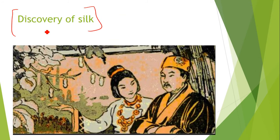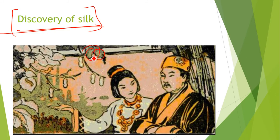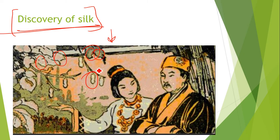Now we will discuss the discovery of silk. What happened in China? A queen noticed that mulberry trees in her garden were being eaten. One day, while the queen was drinking tea, a cocoon fell into her warm cup of tea. The warm water softened the strands and she started feeling them on her fingers. She realized the thread was stronger than a steel wire. This is how silk was discovered, and it then spread from China to the whole world.